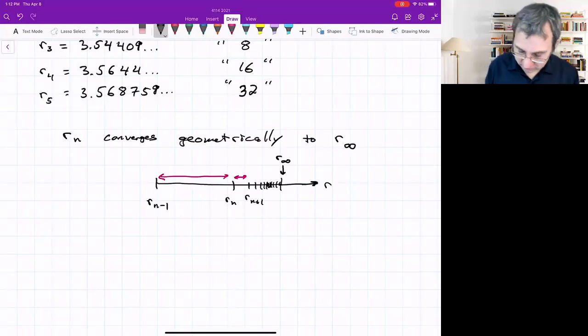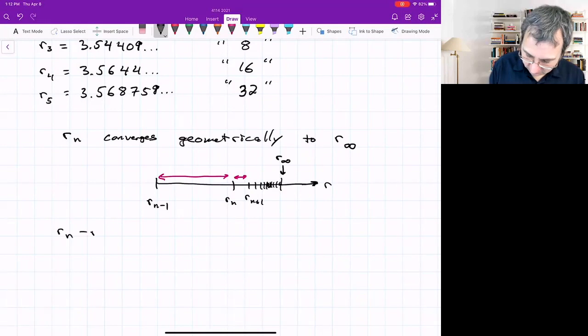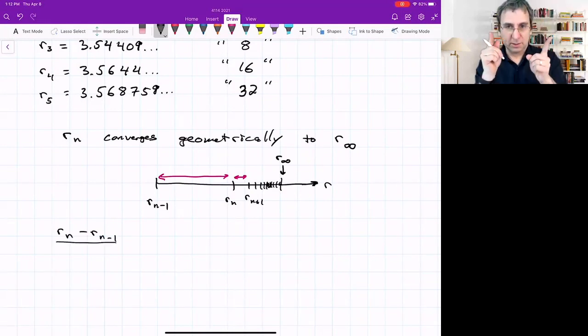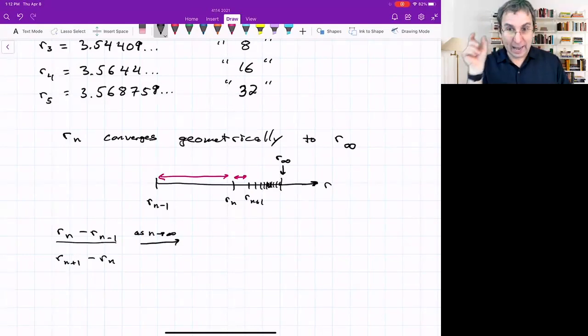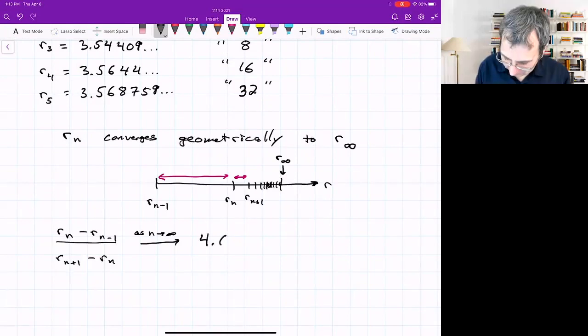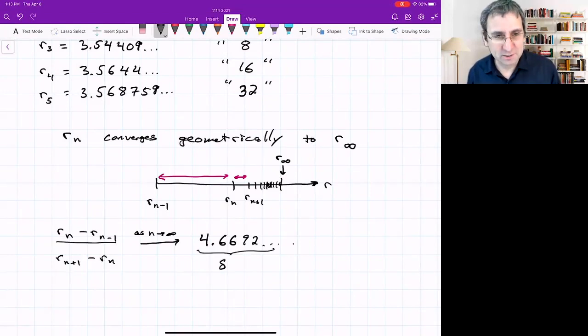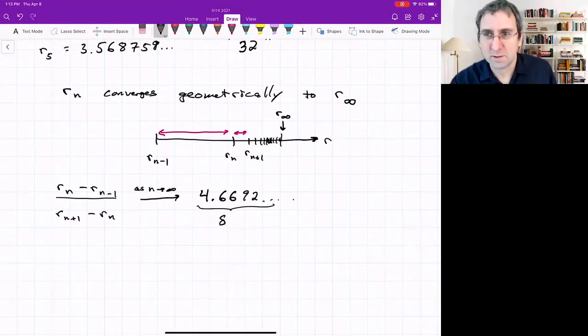If you look at the ratio (R_n - R_{n-1}) divided by (R_{n+1} - R_n), the longer gap divided by the smaller gap, as n goes to infinity, the ratio of those gaps becomes a fixed number: 4.6692... Sometimes called delta, but that's what's going on. R_infinity is something really close to 3.57.